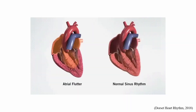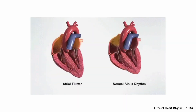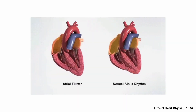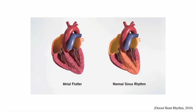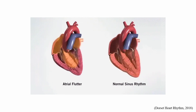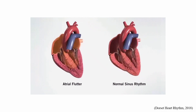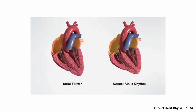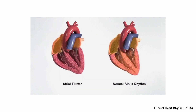Here we have an example of an arrhythmia — specifically, an atrial flutter, which is shown on the left. On the right, we see a normal sinus rhythm. Can you spot the difference?